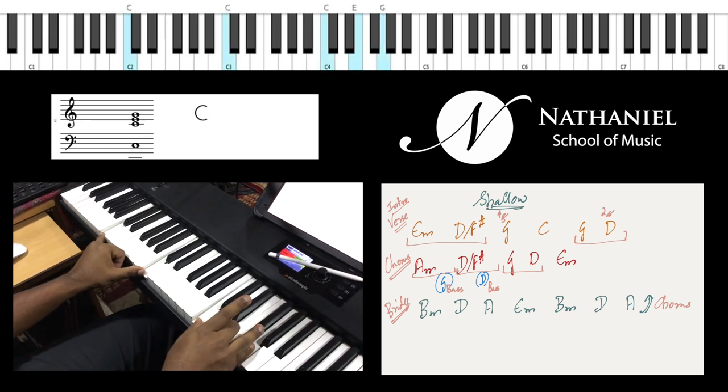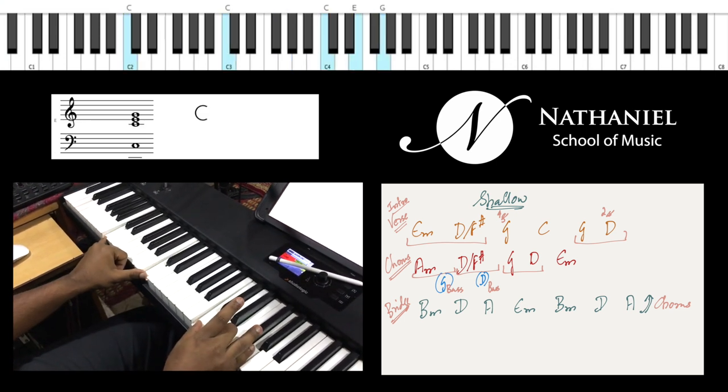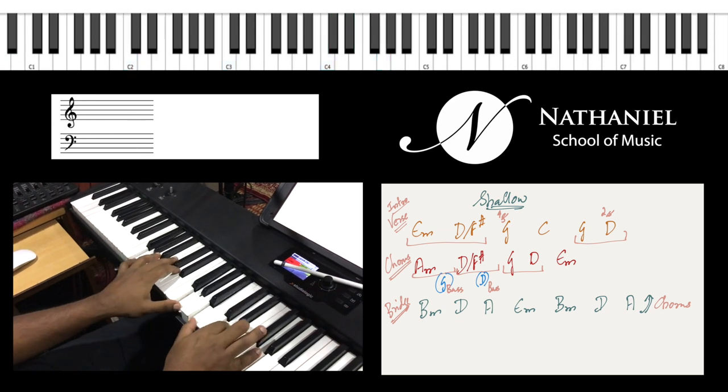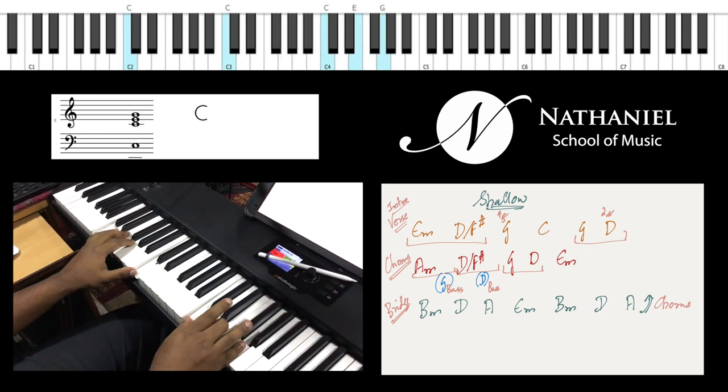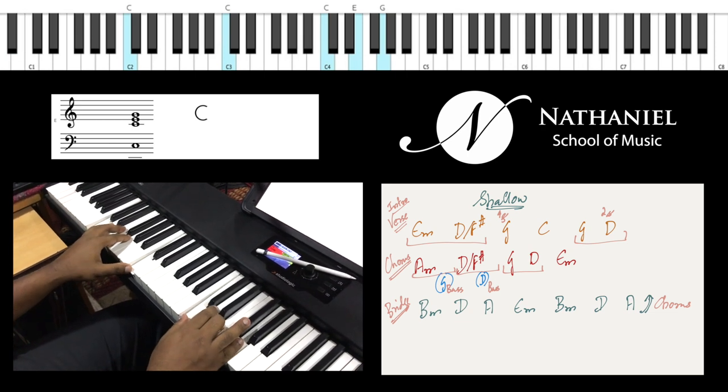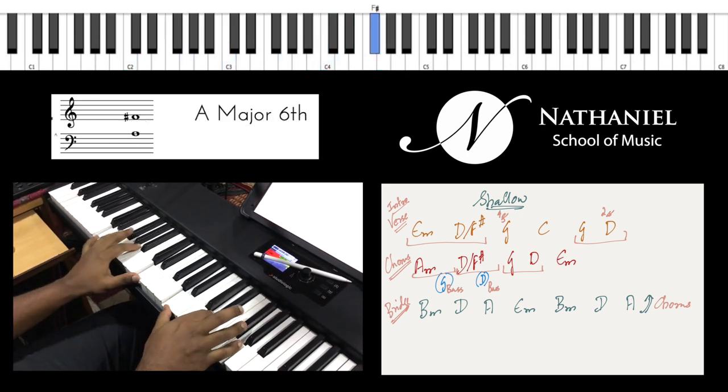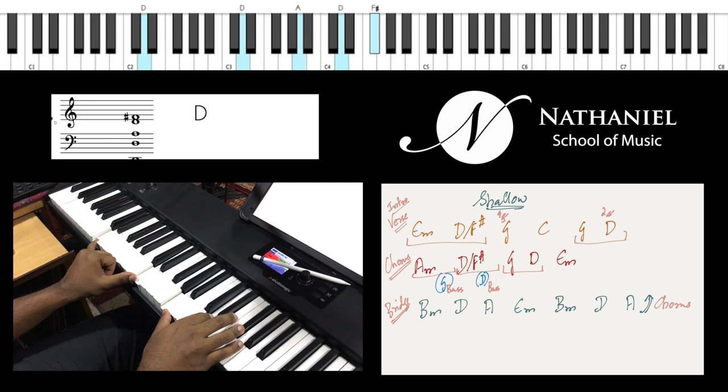And then you go C, normal C. So the second half of the verse is C four times, G twice and then D twice.